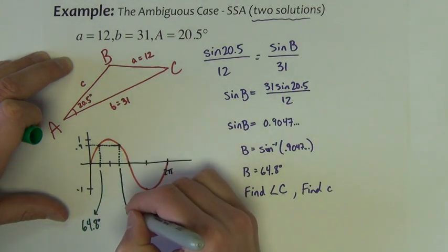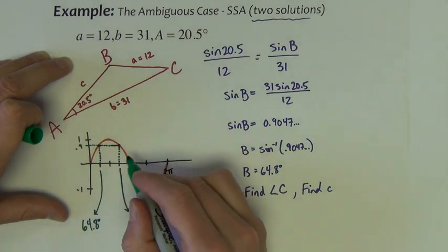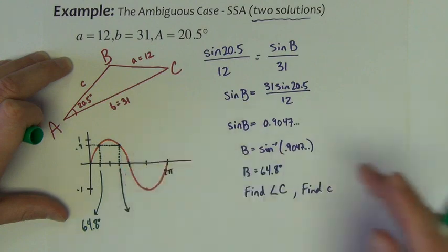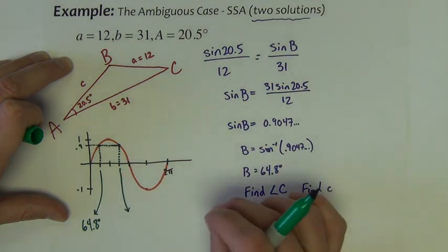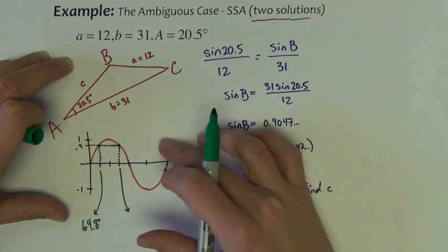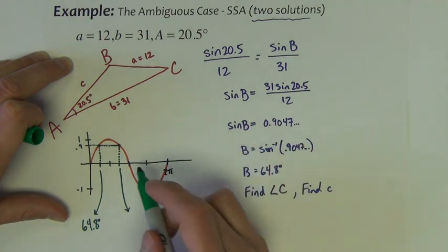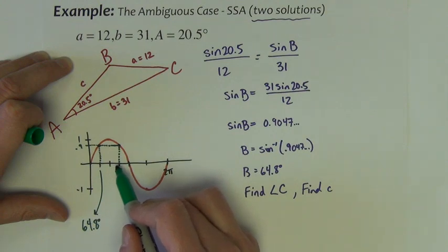The other spot where it hits the x-axis is a solution, but it's not a solution that the calculator is programmed to output. The calculator will only output anything from negative pi over 2 to positive pi over 2. Remember arcsine is the right side of your graph. So it's only going to give me negative 90 to positive 90. It will not give me a number that's bigger than 90.